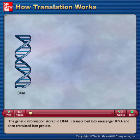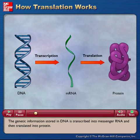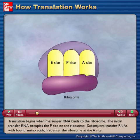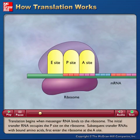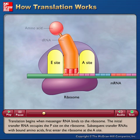The genetic information stored in DNA is transcribed into messenger RNA and then translated into protein. Translation begins when messenger RNA binds to the ribosome. The initial transfer RNA occupies the P site on the ribosome.